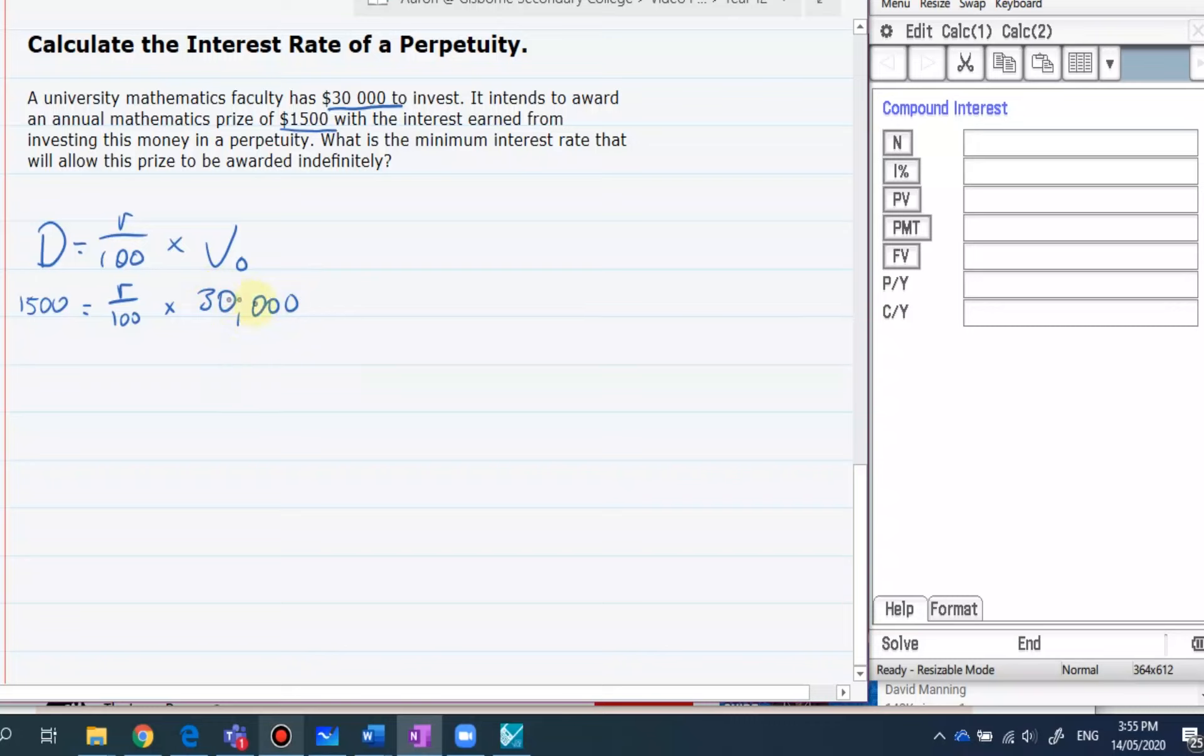And from here we divide both sides by 30,000 and multiply by 100. Now over here we're going to punch it in here. It's going to look something very much like this.